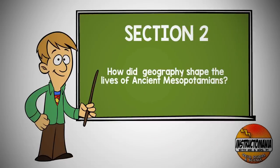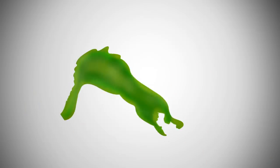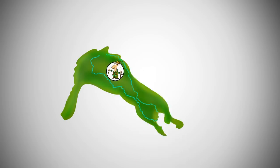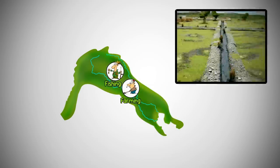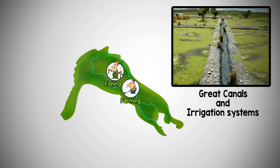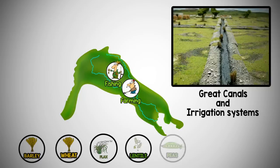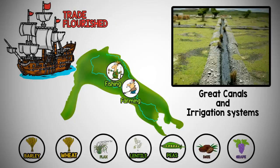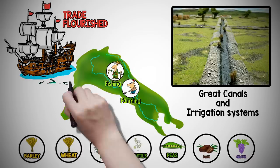Section 2: How did geography shape the lives of ancient Mesopotamians? For the ancient Mesopotamians, life was greatly affected by and dependent upon the Euphrates and Tigris Rivers. In addition to fishing, farming was an important industry. Great canals and irrigation systems that controlled river flooding kept soil rich for farming, creating a surplus of crops such as barley, wheat, flax, lentils, peas, dates, and grapes. Trade flourished due to the increase in food and population. Trade routes followed rivers and ocean coasts in the region to Asia, Africa, and Europe.